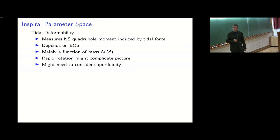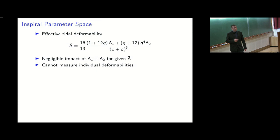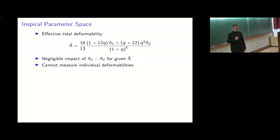The relevant parameter for the inspiral is the effective tidal deformability, which is a linear combination of the two neutron star tidal deformabilities. This linear combination depends on the mass ratio, so if the mass ratio is not well constrained, it complicates tying what we measure to what we want to know about the equation of state. At current sensitivities, the difference between individual tidal deformabilities does not play a significant role — practically, we cannot measure individual tidal deformabilities, only the effective one.